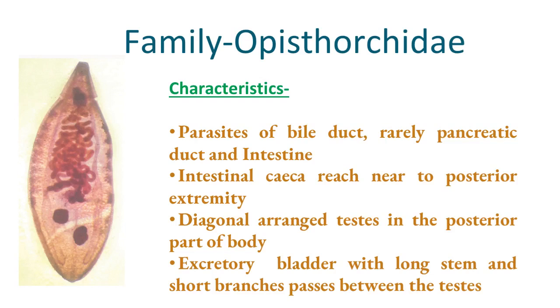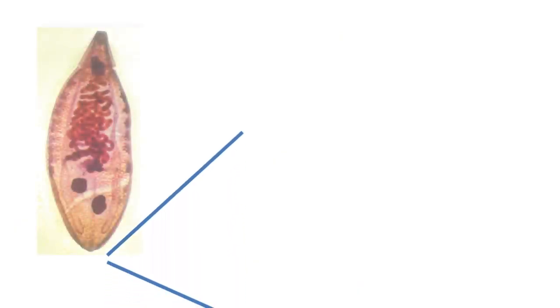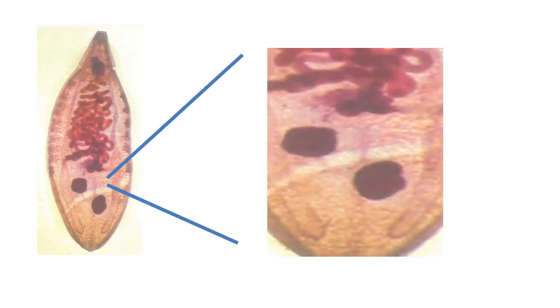The intestinal ceca reach near to the posterior extremity. The testes are diagonally arranged in the posterior part of the body. The excretory bladder has a long stem and short branches. Here, the excretory bladder of the parasite has been shown.